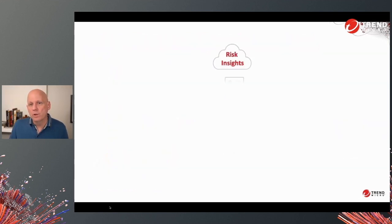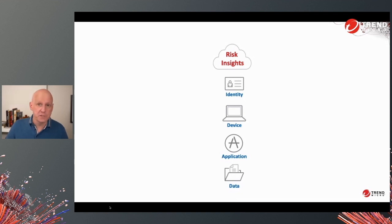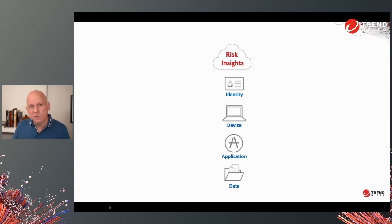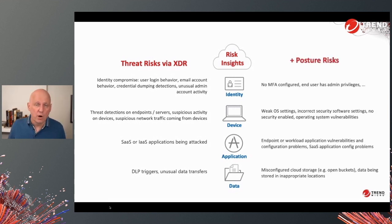This plays into examples like this. If you take a risk insights stack — and this should be the foundation of any system where you're doing SASE or ZTNA, or even micro-segmentation — you're going to say, before I allow these connections, what is the state of identities, devices, applications, and data? There are two sides to this: threat risks, which I argue are most effectively coming from an XDR system, shown in the left column, and posture risks, shown in the right column.